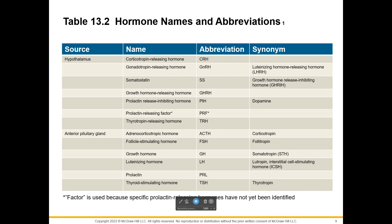The anterior pituitary gland is a major one — the pituitary gland is one of the master glands of the body and releases so many hormones vital for our survival. We find adrenocorticotropic hormone, or ACTH, released by the anterior pituitary. What caused the anterior pituitary to release that hormone? It's the corticotropin releasing hormone from the hypothalamus. So the hypothalamus told the anterior pituitary to release adrenocorticotropin hormone, also called corticotropin.